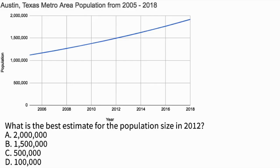Now we see a graph showing the Austin, Texas metro area population from 2005 to 2018. On the vertical axis we see population from 500,000 up to 2 million, and on the horizontal axis we see years from 2006 to 2018. The question is: what is the best estimate for the population size in 2012? A. 2 million, B. 1,500,000, C. 500,000, or D. 100,000.